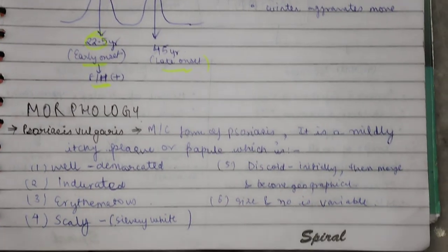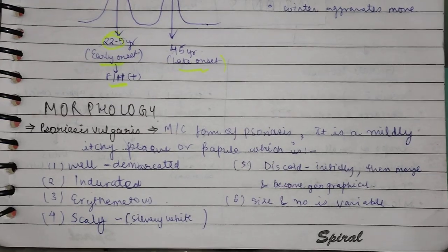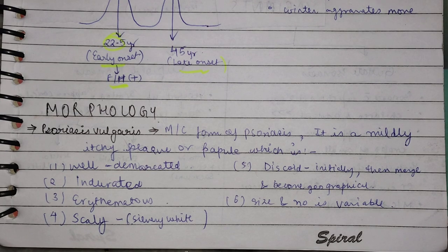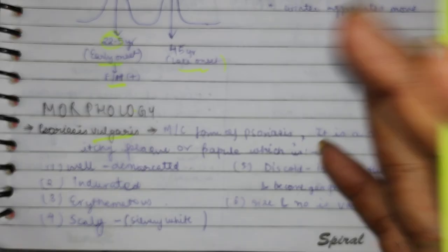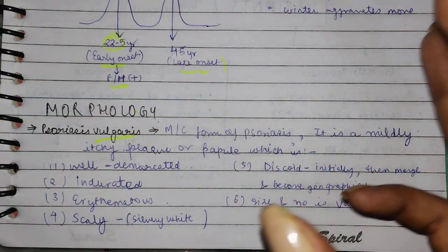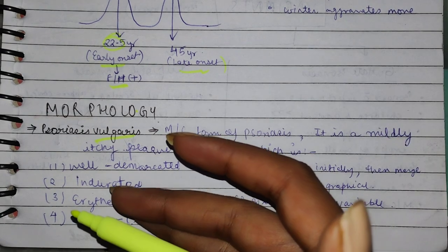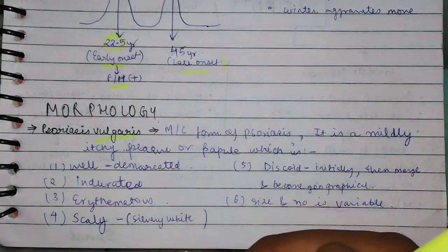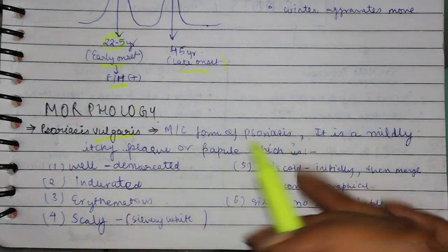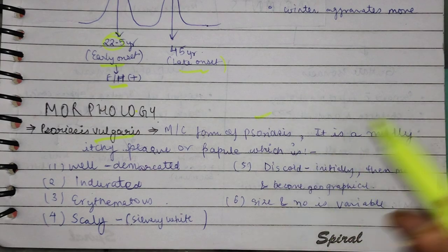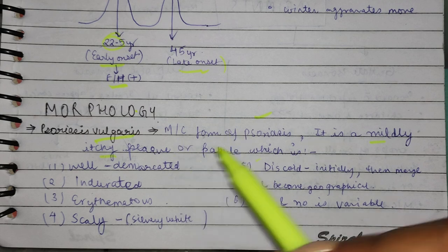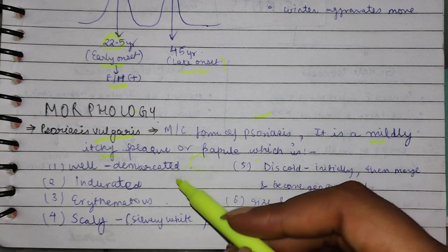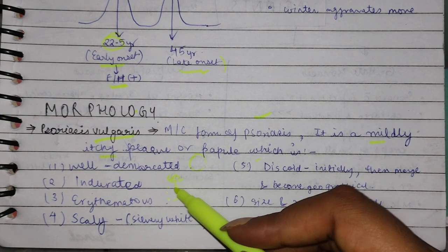Now, we have seen morphology. What type of psoriasis is there? First of all, we are looking at psoriasis vulgaris. Vulgaris means common — so psoriasis vulgaris is the most common form of psoriasis. This is mildly itchy. It presents as itchy plaques or papules. It is well-demarcated, indurated, with redness.